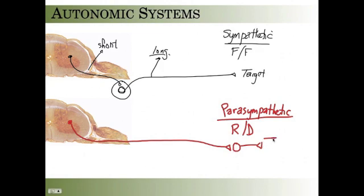This is a ganglion, and then the target is very close to that ganglion. So here, the first neuron has a long axon, the second neuron has a short axon. There's a fundamental difference between function, fight or flight versus rest and digest, and structure: two-neuron chain with a long and a short, and a short and a long.